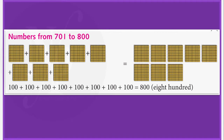Dear children, as we know, each of these panels contain 100 beads in them. Here let us see how many such panels of beads we have. Let us count: 1, 2, 3, 4, 5, 6, 7, 8. So we have 8 panels containing 100 beads in each of them. So if we put all these 8 panels of beads together, there will be 800 beads in them. Therefore, these 8 panels containing 100 beads in them represents the number 800.